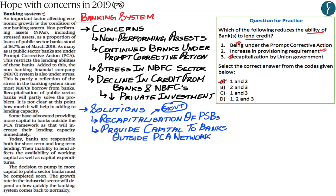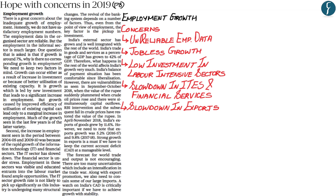The third and fourth concerns are employment growth and current account deficit. There are five main concerns regarding employment growth. First, unreliable employment data — employment data in the organized sector is still reliable, but data in the informal sector is not satisfactory. Second, jobless growth — India is still growing at around 7%, but there has been no corresponding growth in employment. Employment growth can occur through increased investment or better utilization of existing capacity, but both are underperforming in India.